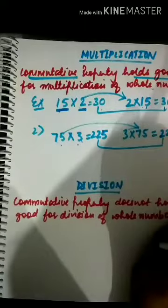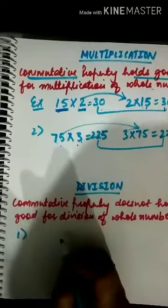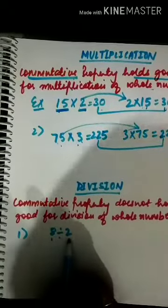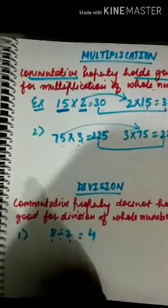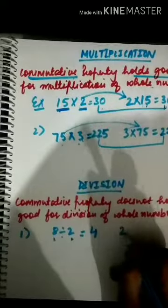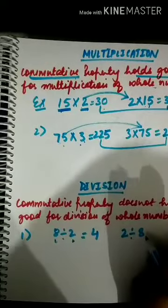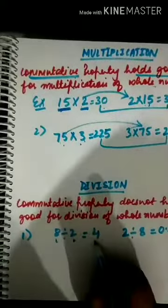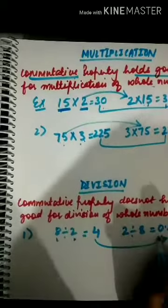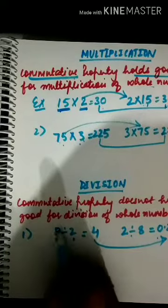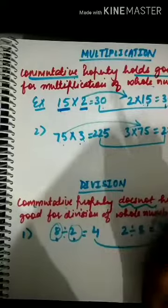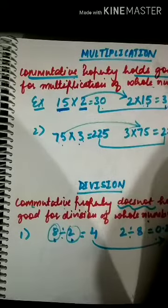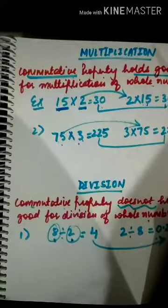Now let's check commutative property for division. Take 8 divided by 2 — the answer is 4. Changing the order: 2 divided by 8 gives 0.25. The answers are not the same when I change the order of these two whole numbers. That means commutative property does not hold good for division of whole numbers. I hope you have clearly understood both the closure property and the commutative property.